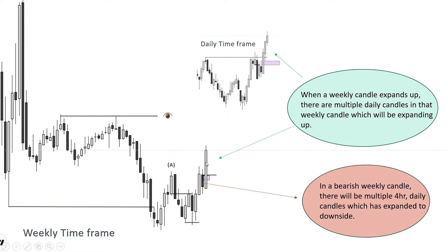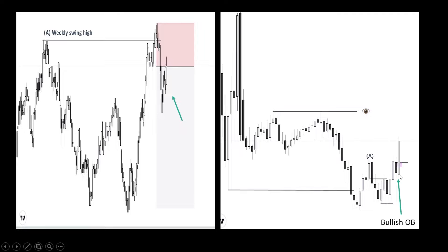When a weekly candle expands up, there are multiple daily candles in that weekly candle which will also be expanding up. This swing high just provided a temporary retracement. Remember what I said — when our bias is up, bearish PDRs in between are just temporary speed breakers. If you see this from a weekly perspective, this bearish down candle appears common, but for traders viewing price action on the four-hour time frame without a defined weekly bias, they get induced to short easily, forgetting their weekly anticipation to the upside.